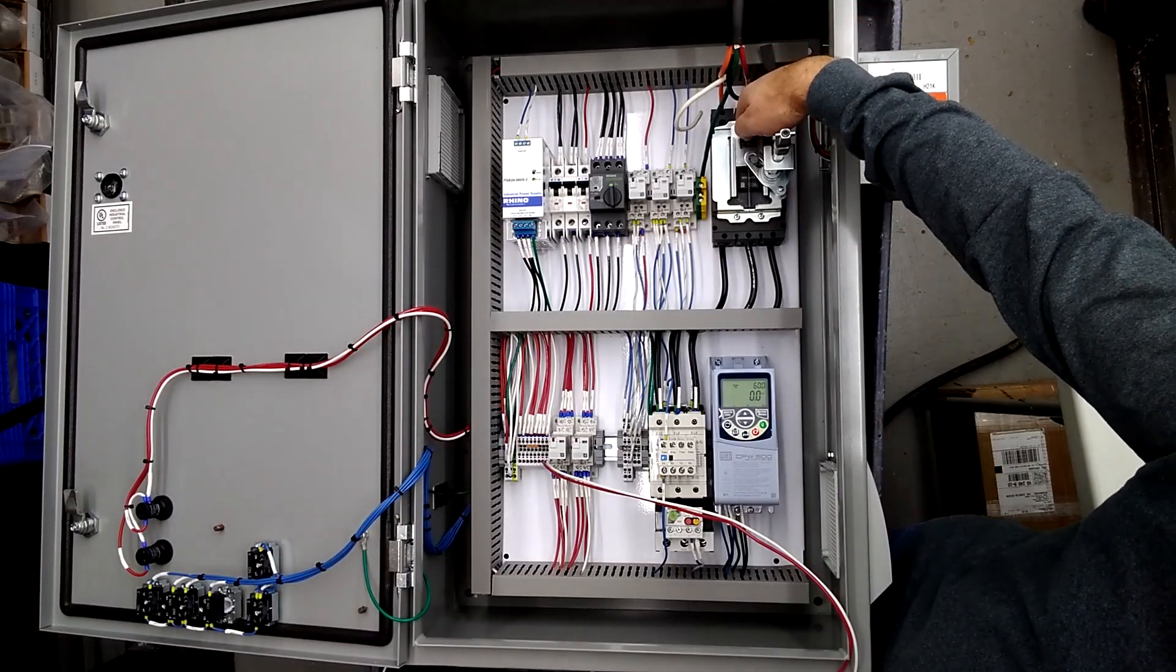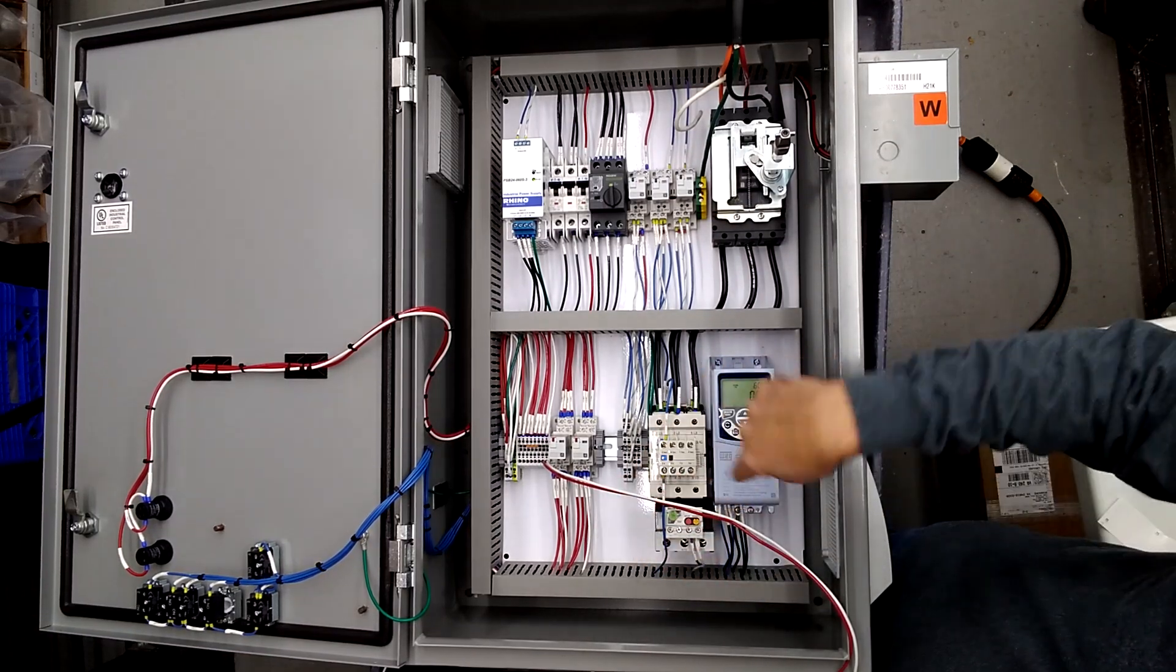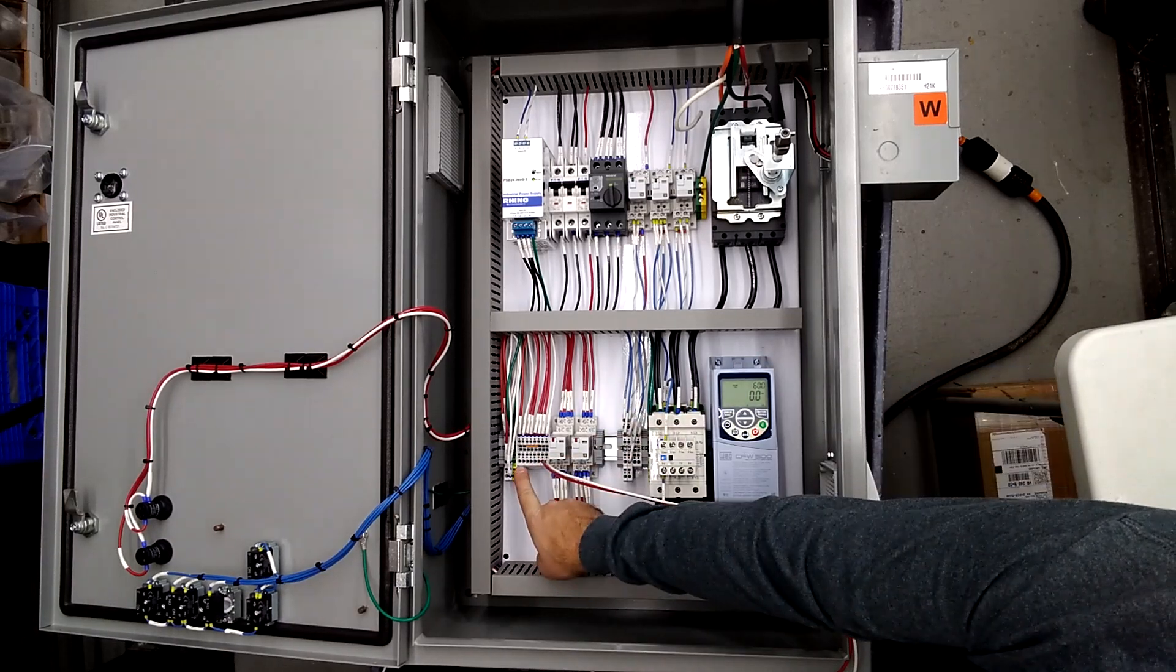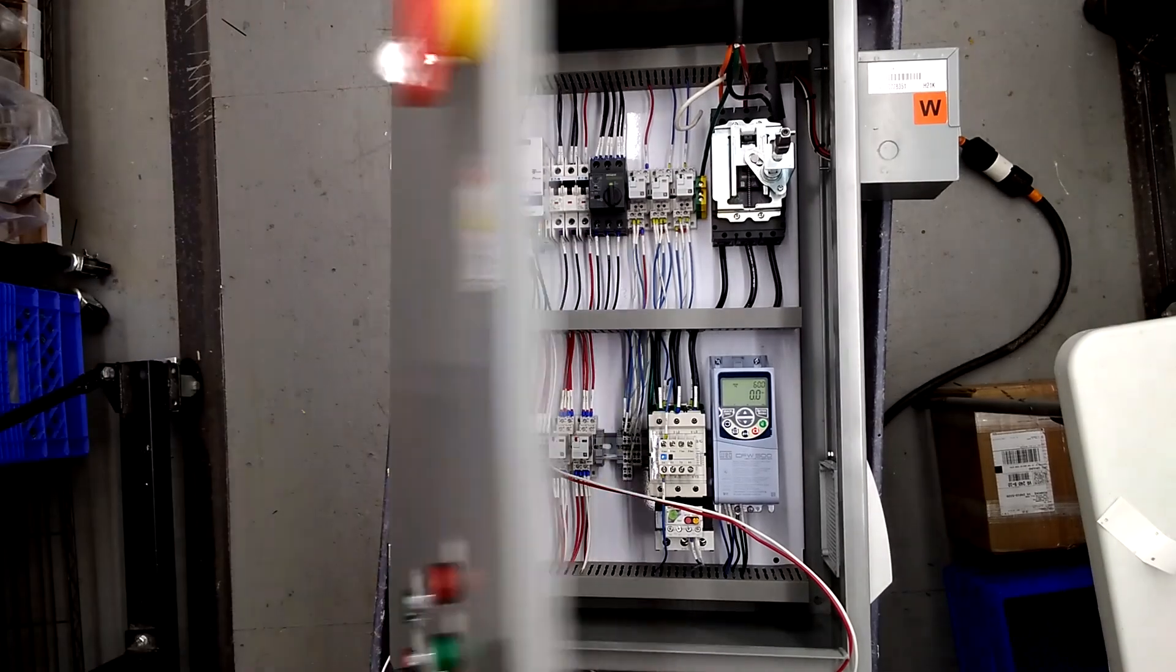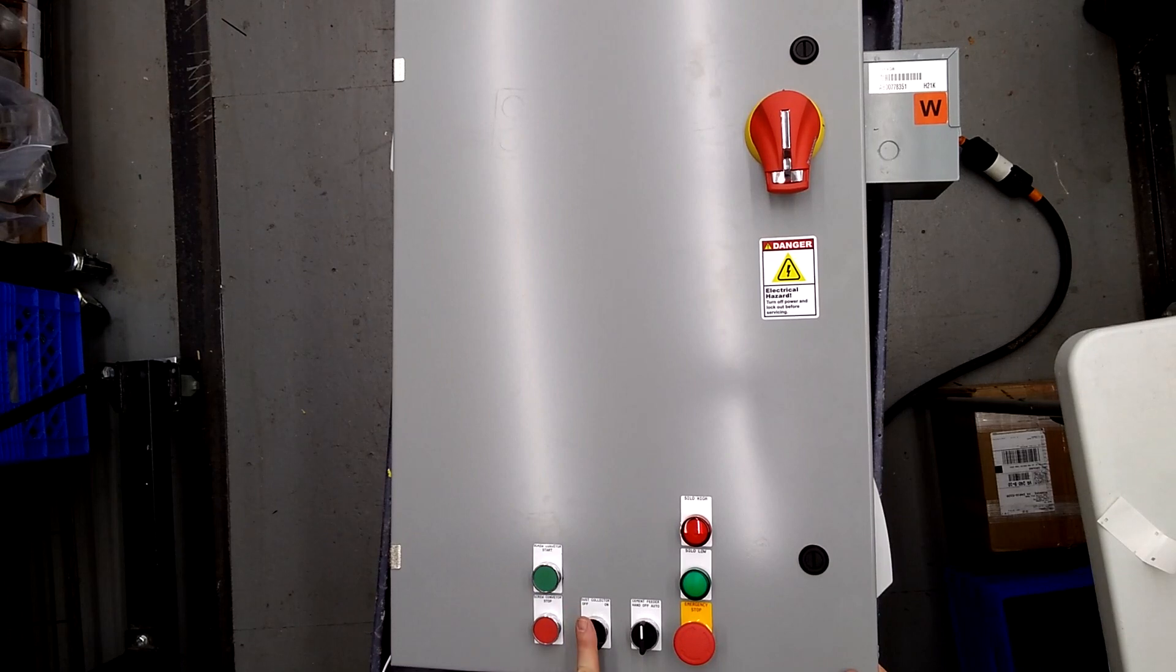480 volt three-phase coming in. Here is your 30 horsepower motor. This is your three horsepower drive and your dust collector is going to connect over here. On the front we've got screw conveyor start stop that's the 30 horsepower. We have the dust collector that's 120 volt and then we have the cement feeder which we have a hand off and auto for.